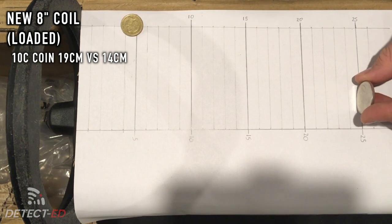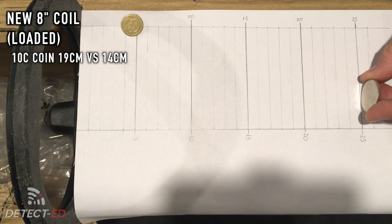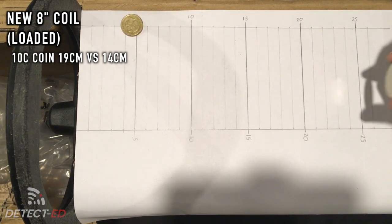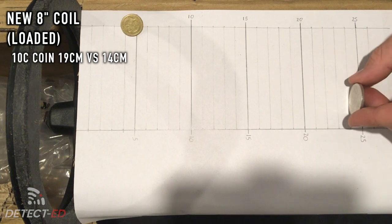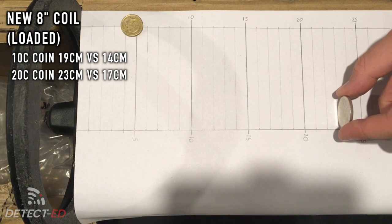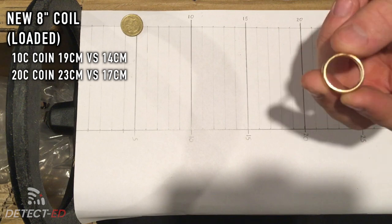We'll do the gold as well. We can technically get 25 but it's not real consistent, so 23 quite easily. 23 centimeters and our 14k 5.7 gram ring.